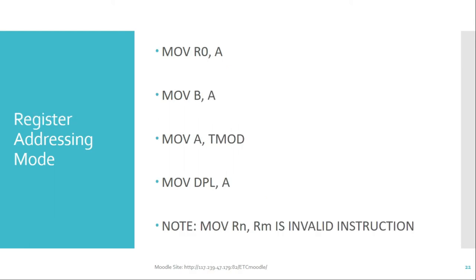Next is register addressing mode. In this mode, both the source operand and destination operand are registers. For example, MOV R0, A — here R0 is the destination operand and A is the source operand. Another example is using TMOD, which is a timer SFR register, and the accumulator — both operands are registers.